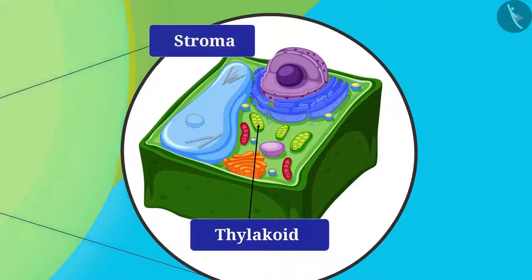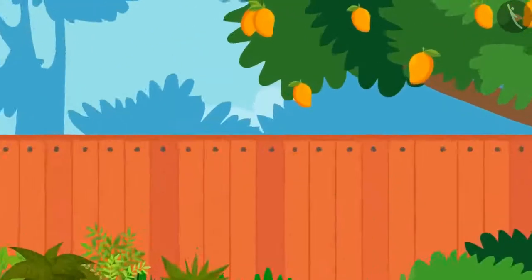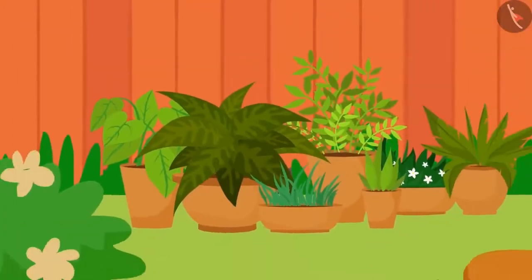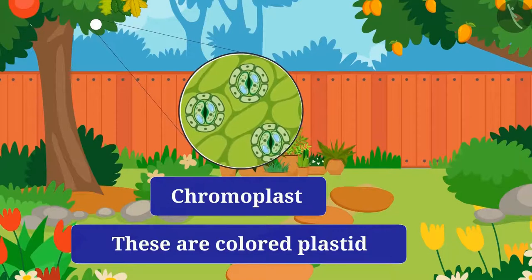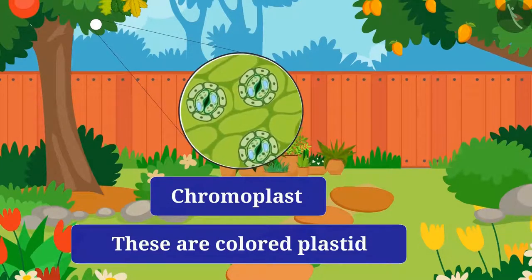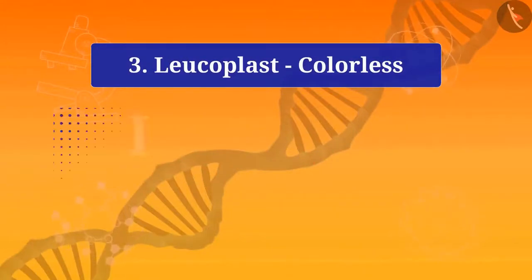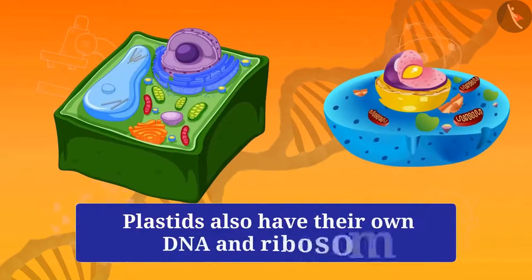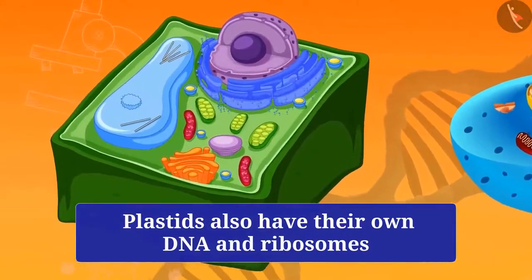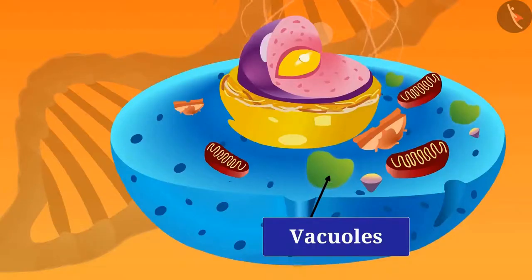Chromoplasts are colored plastids that provide different colors to the leaves, flowers, and fruits of a plant — this is why leaves, fruits, and flowers are of different colors. Leucoplasts are colorless plastids in which substances like starch, oil, and protein are stored. Plastids also have their own DNA and ribosomes, which help in the synthesis of protein.